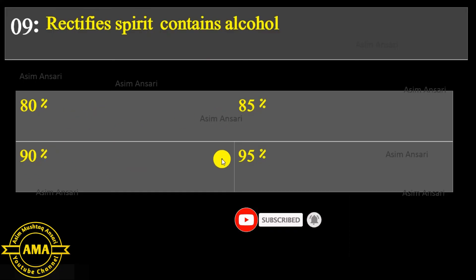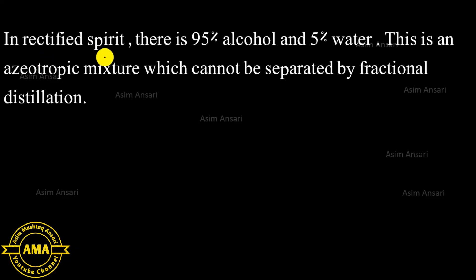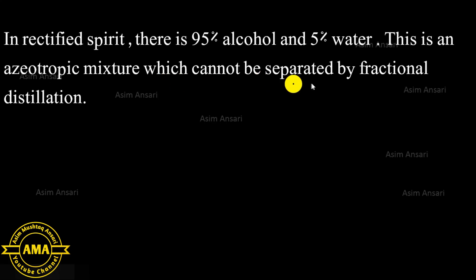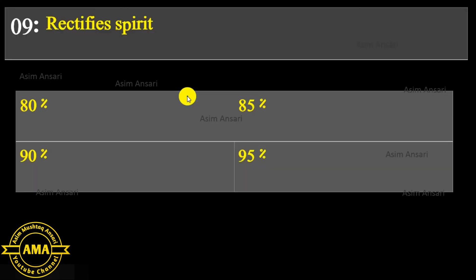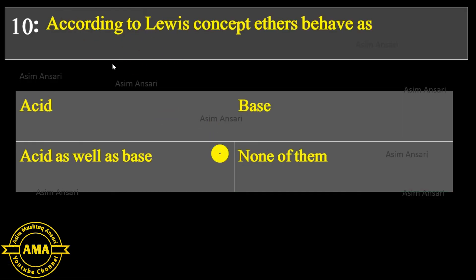Next MCQ: Rectified spirit contains alcohol at what percentage — 80%, 85%, 90%, or 95%? In rectified spirit there is 95% alcohol and 5% water. This is an azeotropic mixture which cannot be separated by fractional distillation. The exact answer is 95%.